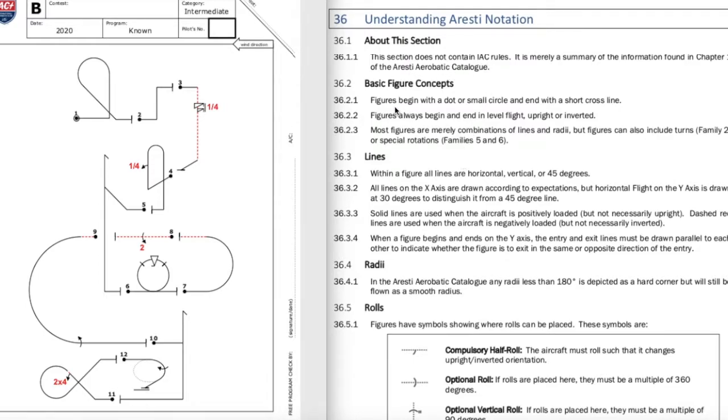Alright so basic figure concepts. Figures begin with a dot or a small circle and end with a short cross line. What is it talking about? Well here's your dot. It starts with figure one. Figure one which is your first figure has this circle around the solid circle where you see the follow on figures don't. So that shows you this is the beginning of a sequence.